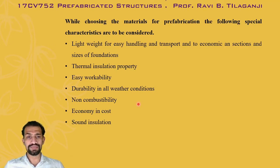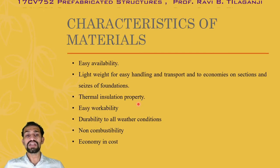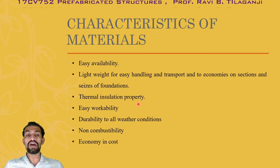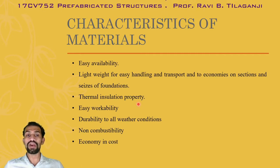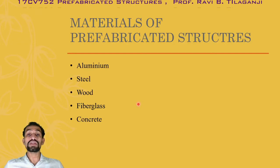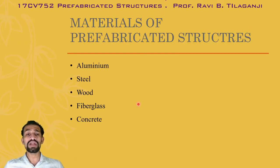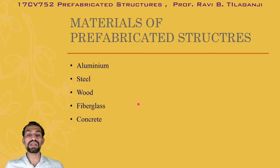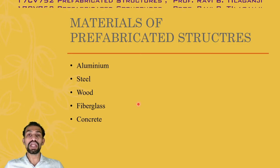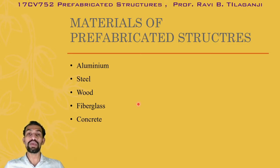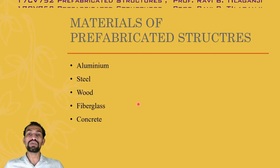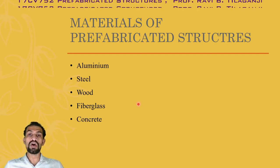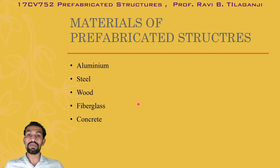So these were the particular characteristics of materials. We need to have these particular things in mind and then proceed. For materials of prefabricated structures, some materials are already known to us from conventional building, but the same materials can also be used as prefabricated materials wherein we stick to the materials for preparation of sections, panels, or elements of prefabricated structures.